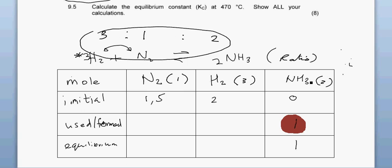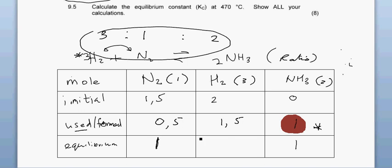So the mole ratio is 1 : 3 : 2, and our values are half of that: 0.5 N₂ used, 1.5 H₂ used, and 1 NH₃ formed. Initially we had 1.5 moles of nitrogen — 0.5 moles were used, so 1 mole of nitrogen remains. We had 2 moles of hydrogen — 1.5 moles were used, so 0.5 moles of hydrogen remain at equilibrium.